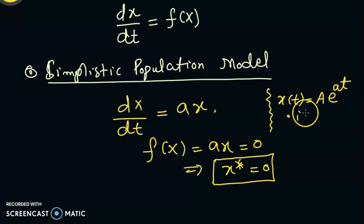Now if a > 0, then as t goes to infinity, we have already seen that x(t) also goes to infinity. In other words, the solution blows up. So x(t) is going towards infinity, which means it's moving away from x* = 0.